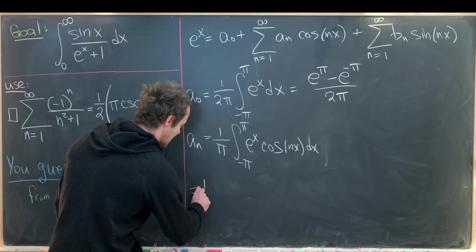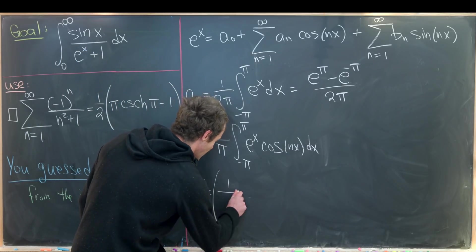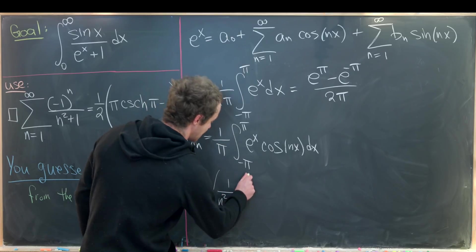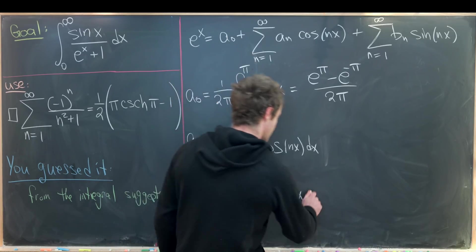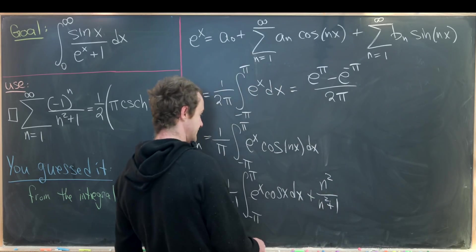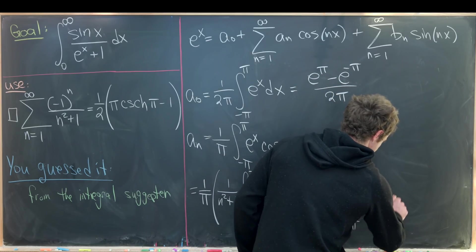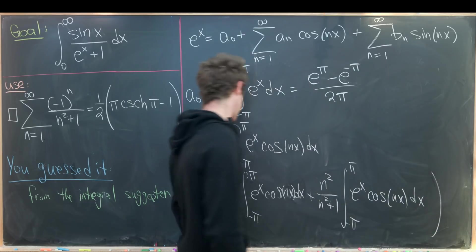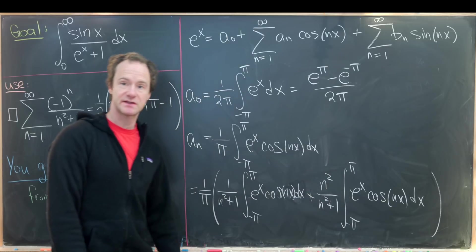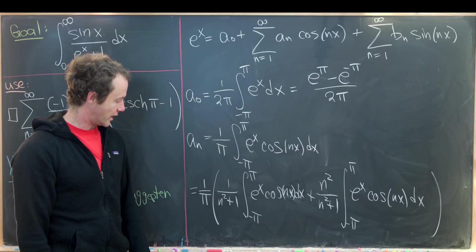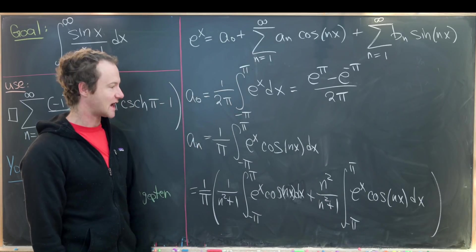I'll write aₙ as 1 over π times the integral, split as: 1 over n squared plus 1 times the integral from minus π to π of e to the x cosine nx dx, plus n squared over n squared plus 1 of the same integral. All I've done is separated the single integral into two copies with coefficients that add to 1, since n squared plus 1 over n squared plus 1 equals 1.